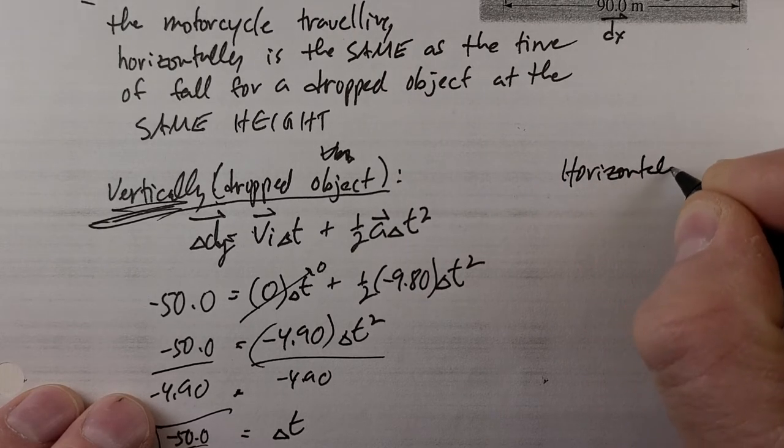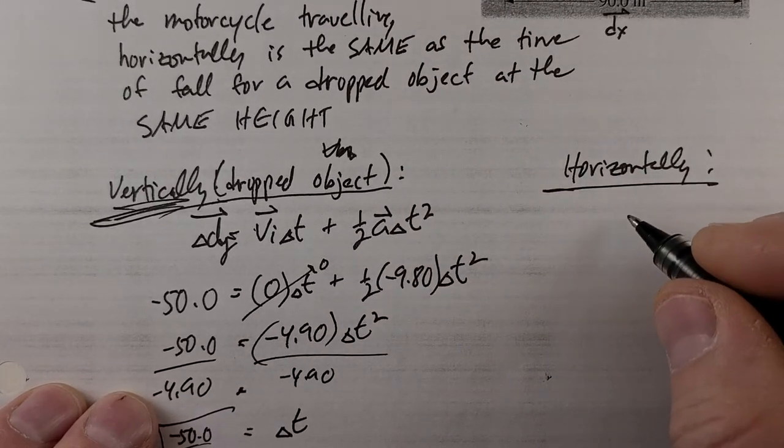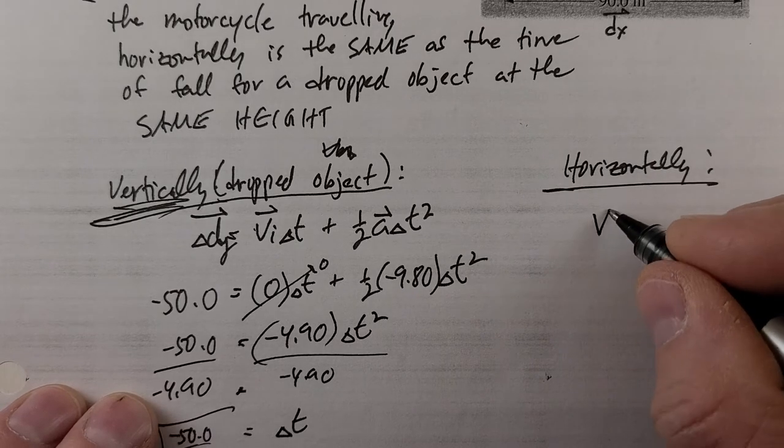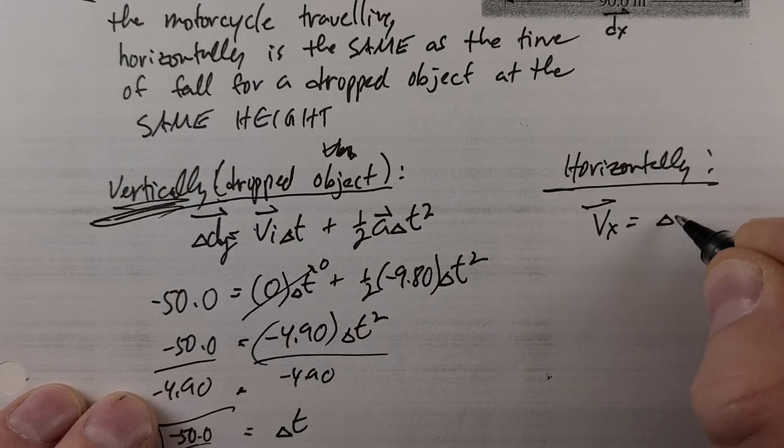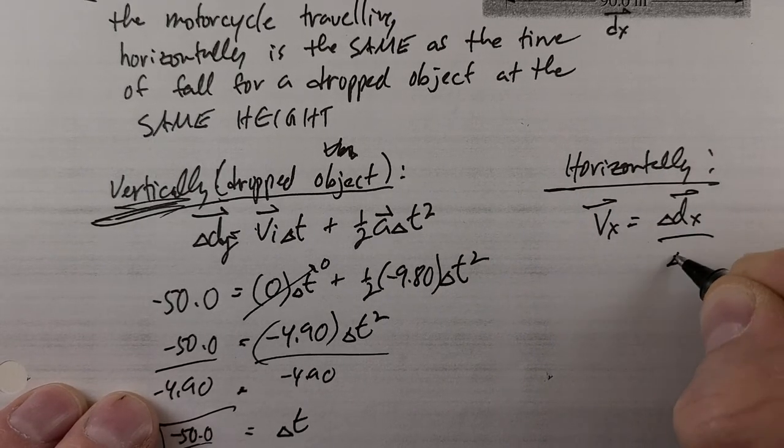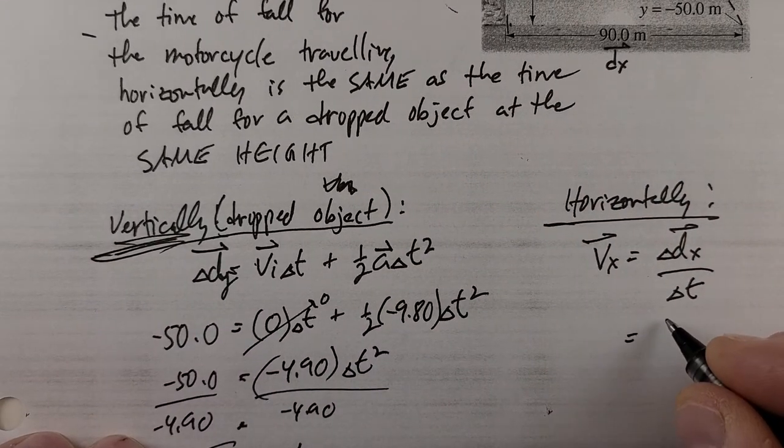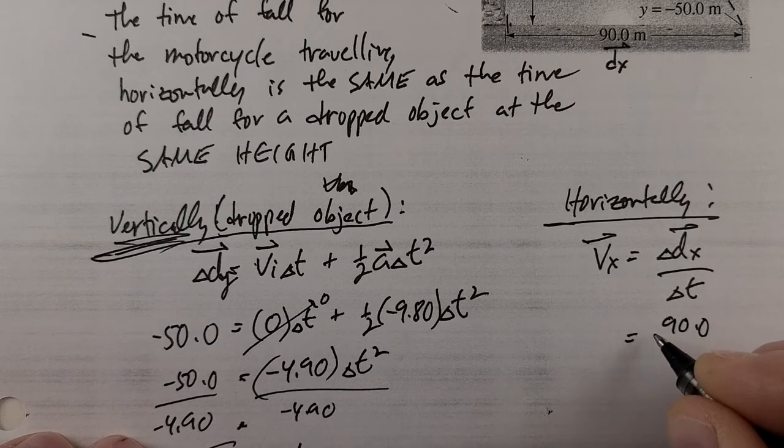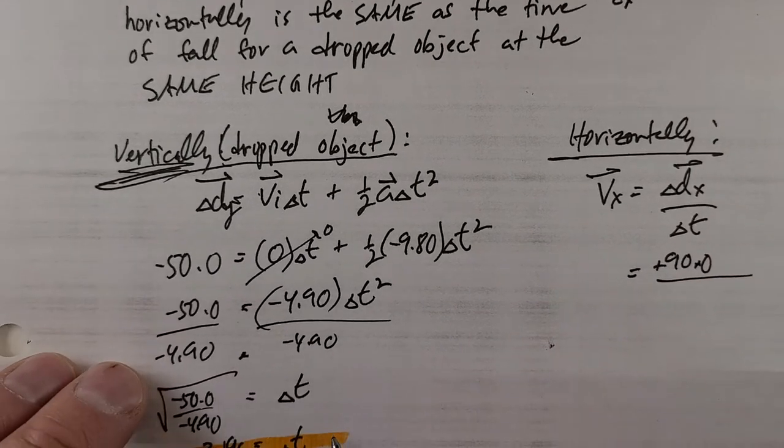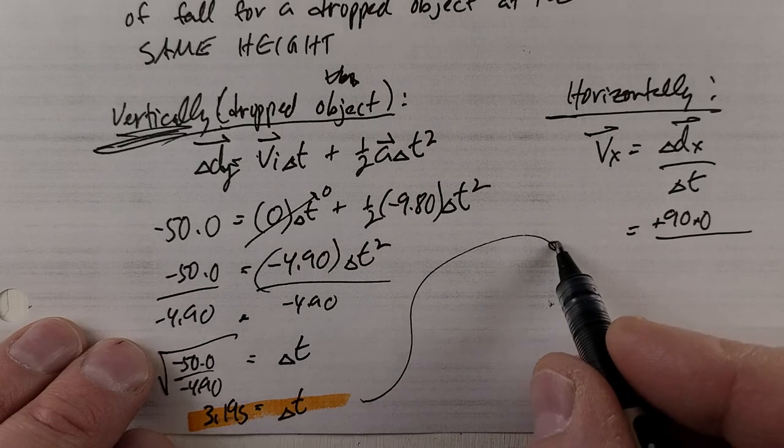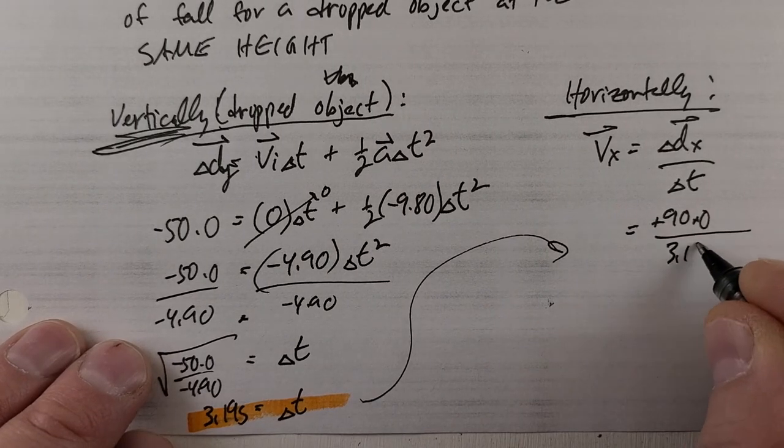What's going on? It's going at constant velocity, remember. So vx equals Δdx over Δt. My horizontal displacement is 90, and the time of flight is 3.19 seconds.